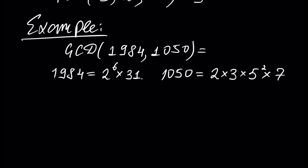We have to take the common prime number factors. The only common prime number factor is two — thirty-one is not common because we cannot see it in the second factorization, and three, five, and seven are not common either. So the only common prime number is two. We write two with the smallest exponent, which is one. Therefore, the greatest common divisor of these two numbers is two.